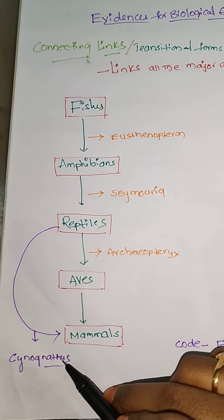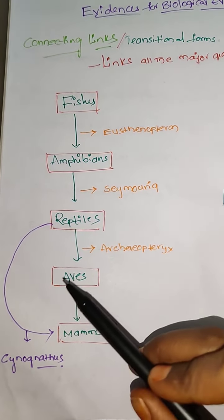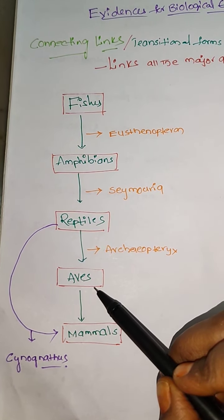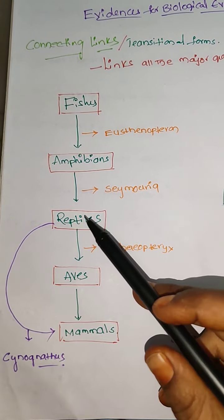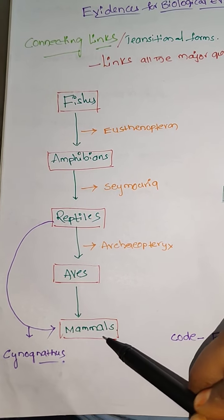Then Cynognathus. It is the connecting link between the reptiles and mammals, but not between aves and mammals. You have to remember carefully here, it is the connecting link between the direct reptiles to mammals, not between aves and mammals.